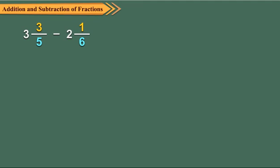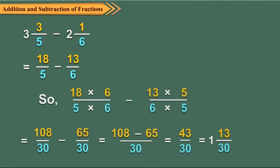First, we convert the mixed fractions into improper fractions. Now, LCM of 5 and 6 is 30.